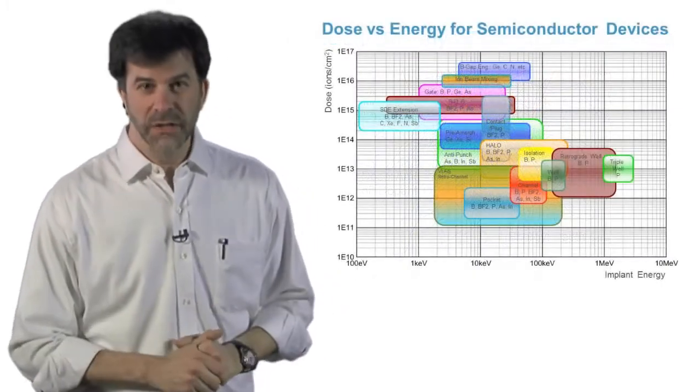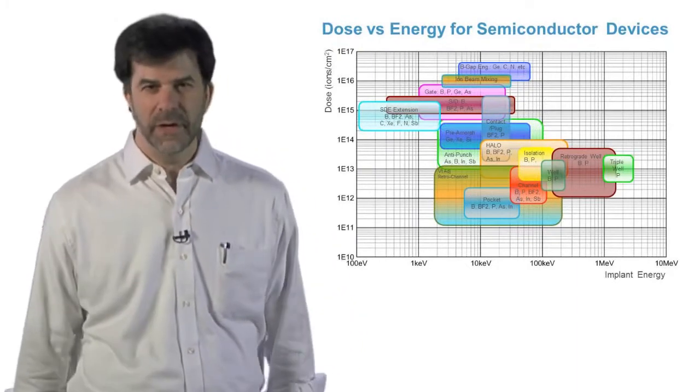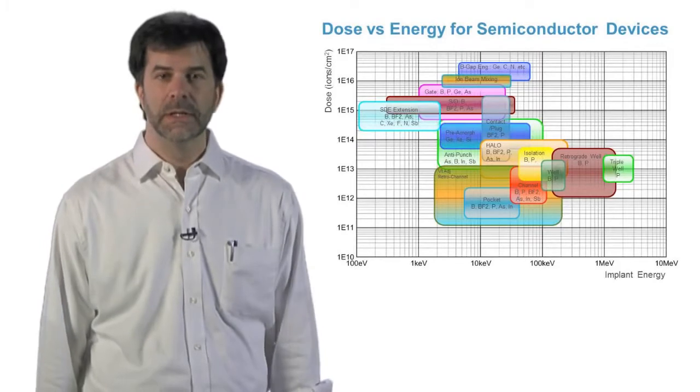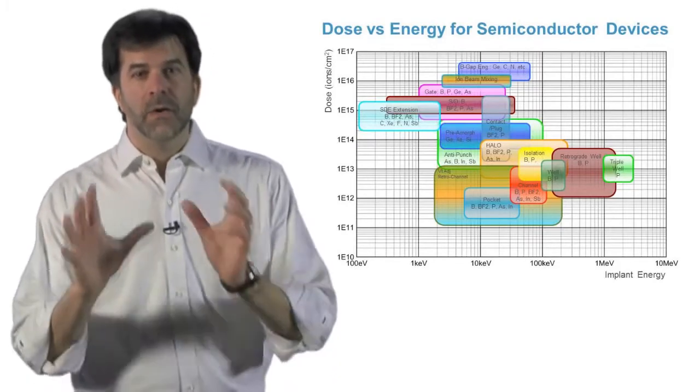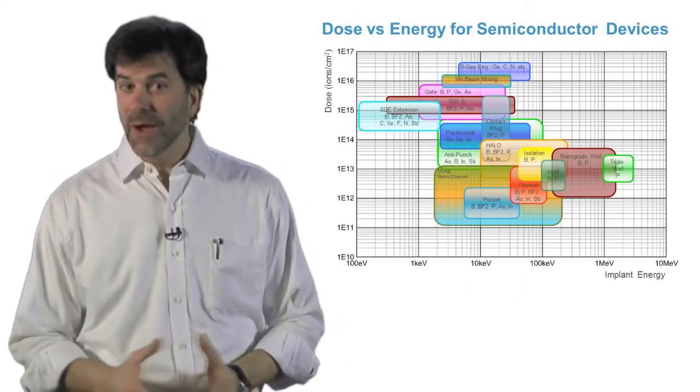Okay, let's talk a little bit about how an implanter works. Now, remember we talked about dose and energy being the key variables in defining an implant recipe. Ideally, one type of implanter would be able to accommodate all implant recipes.